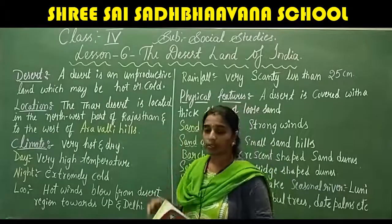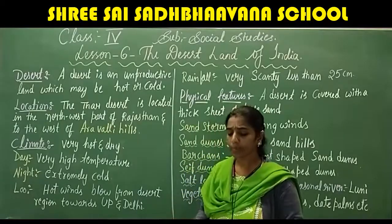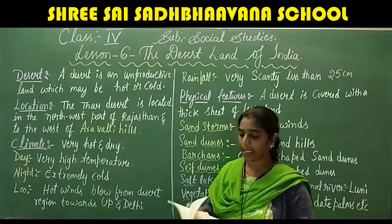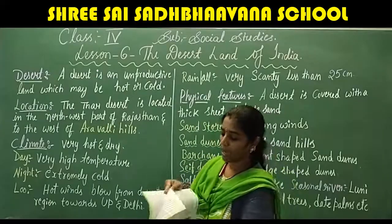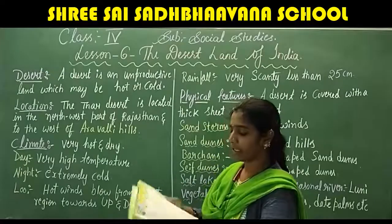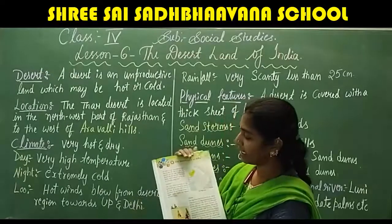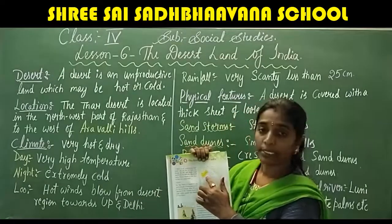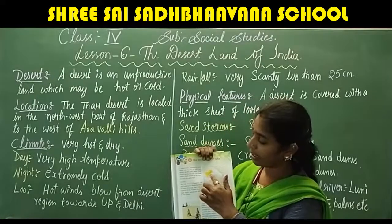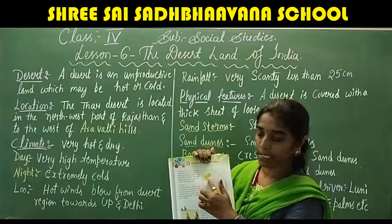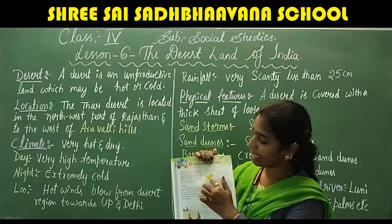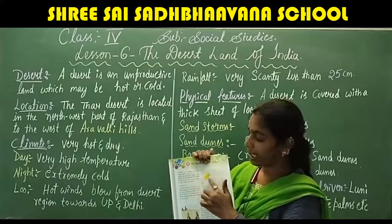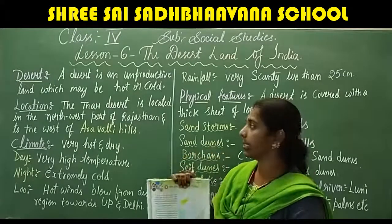You can see in page number 39, in the map given there, the Indian Desert — that is the Thar Desert. The yellow colored region on the map is the Thar Desert.